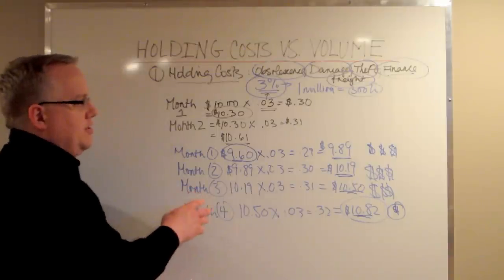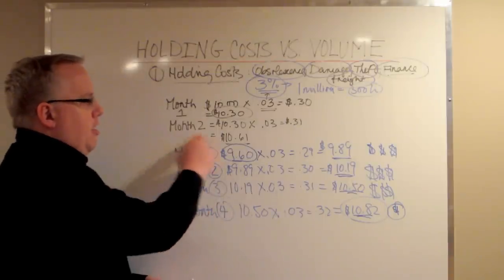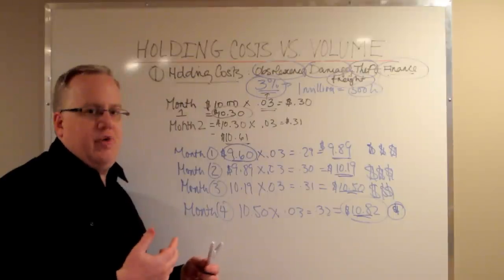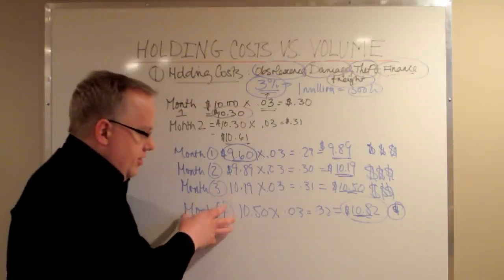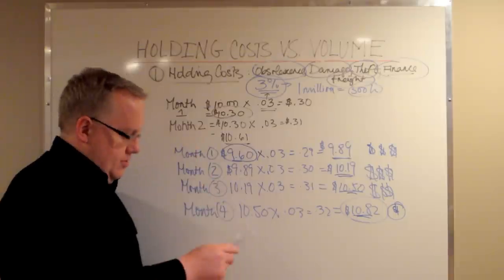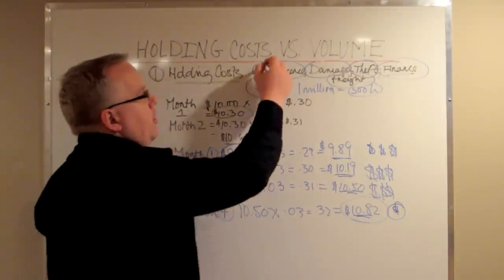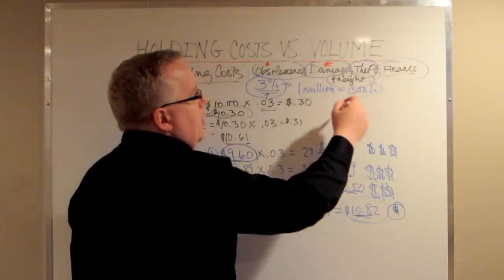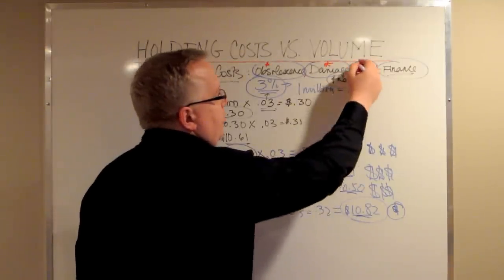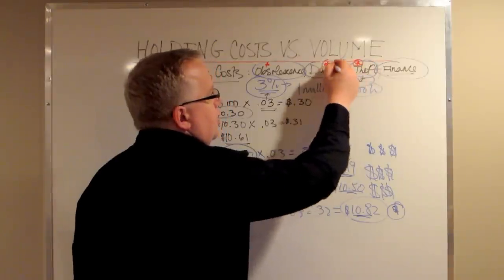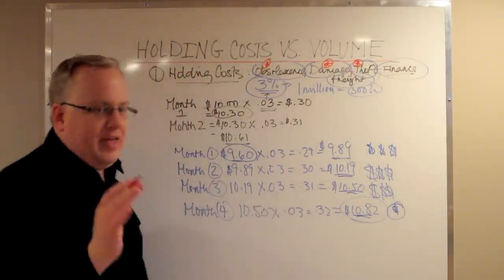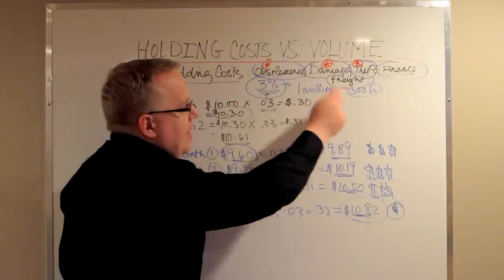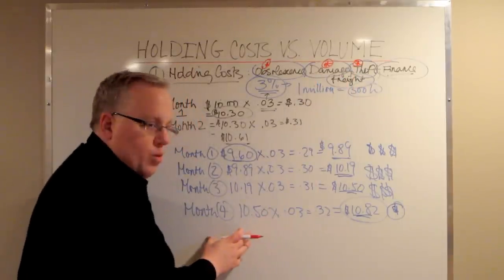So if you want to do this type of analysis, understand you may be comfortable with the status quo only because you know it's not a cost of money. This analysis and this process works if you can control obsolescence, if you can control damage, and if you can control theft. Meaning that if you have the ability to reduce the incidence of obsolescence, damage, and theft, this will work.